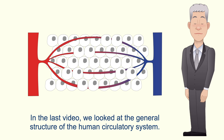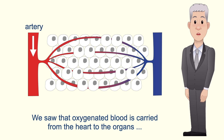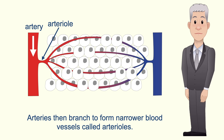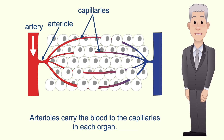In the last video we looked at the general structure of the human circulatory system. We saw that oxygenated blood is carried from the heart to the organs in blood vessels called arteries. Arteries then branch to form narrower blood vessels called arterioles, which carry the blood to the capillaries in each organ.